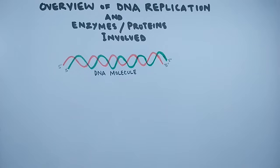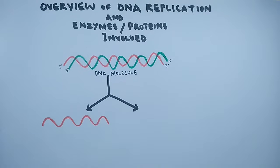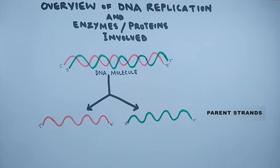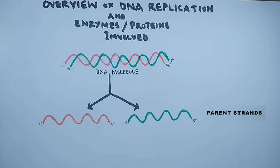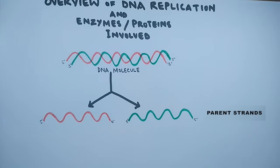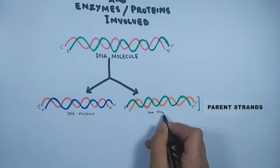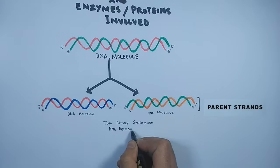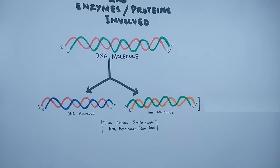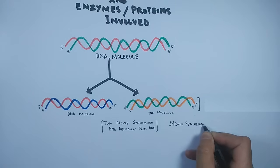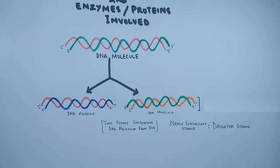In DNA replication, the single DNA molecule having two strands is replicated to form two DNA molecules. The two strands act as parent strands to make two DNA copies. Enzymes and proteins work on these parent strands to synthesize the daughter strands on both strands, so that in the end we get two identical DNA copies.